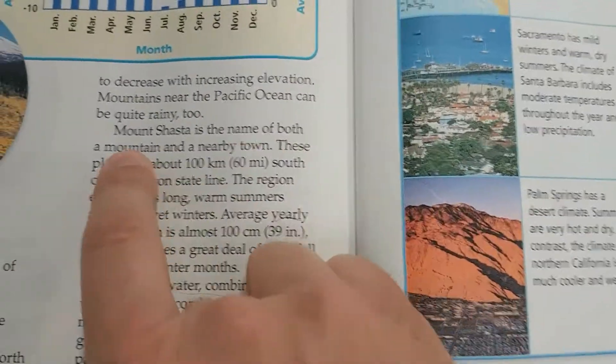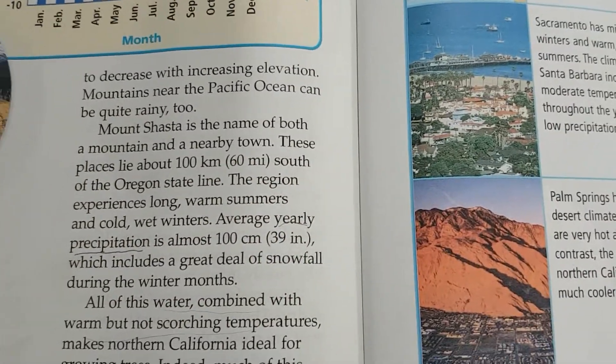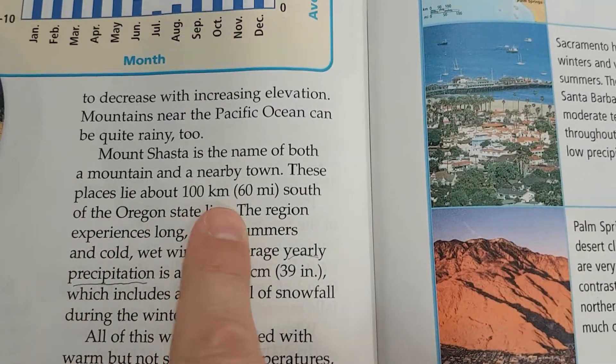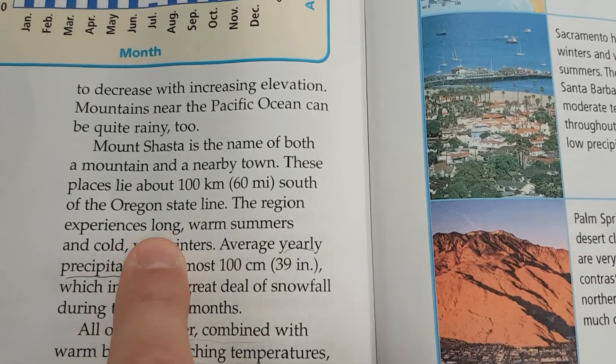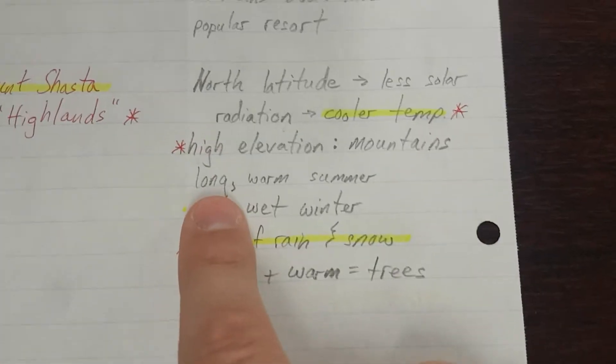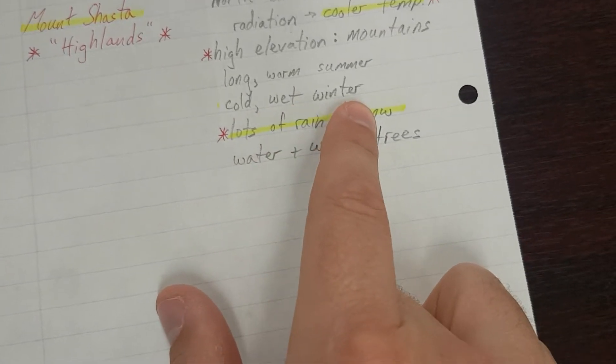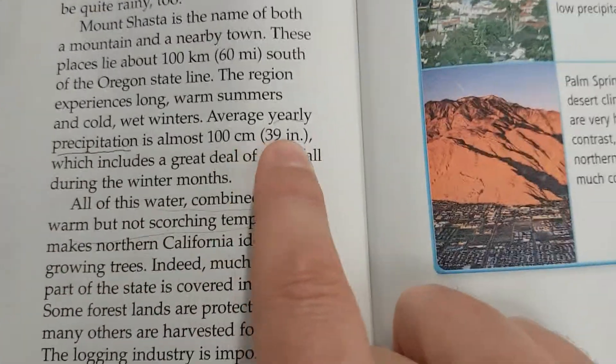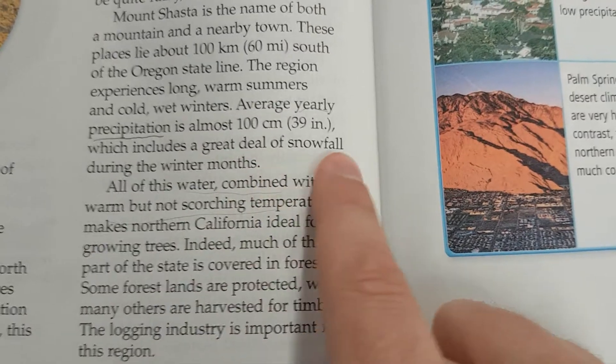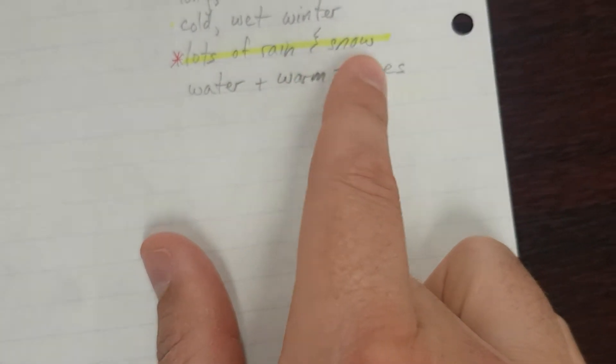Now Shasta is the name of both a mountain and a nearby town. These places lie about 100 kilometers or 60 miles south of the Oregon state line. The region experiences long warm summers, long warm summer, and cold wet winters. Cold wet winter. Average yearly precipitation is almost 100 centimeters or 39 inches, which includes a great deal of snowfall during the winter months. Lots of rain and snow.